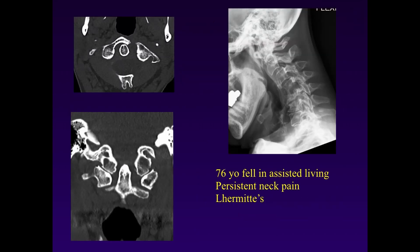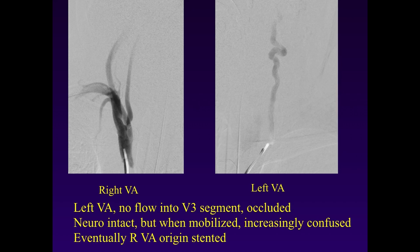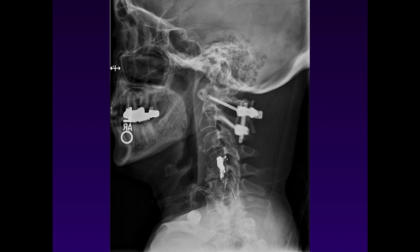A second case: a 76-year-old woman with an unstable C1 fracture and persistent pain despite bracing. At surgery, there was no problem with the vertebral artery on initial drilling of the C1 lateral mass, but on tapping, a tortuous vertebral artery was injured. The vessel was tamponaded and the patient was taken to angiogram where the left vertebral artery was occluded; balloon embolization was performed. The patient was neurologically intact, but when she mobilized she became increasingly confused. A tight segment on the right vertebral artery origin was noted and had to be stented. This case demonstrates the importance of involving endovascular colleagues to control bleeding and analyze the posterior circulation.